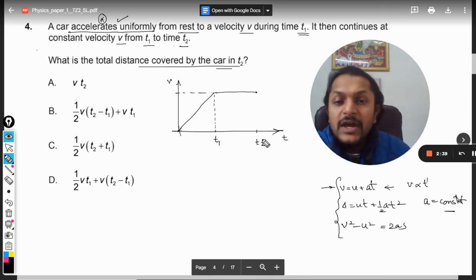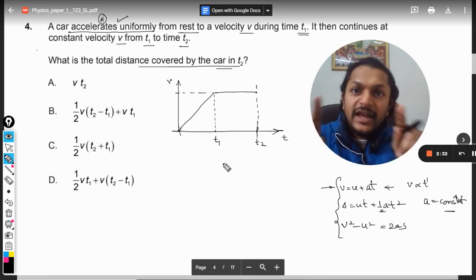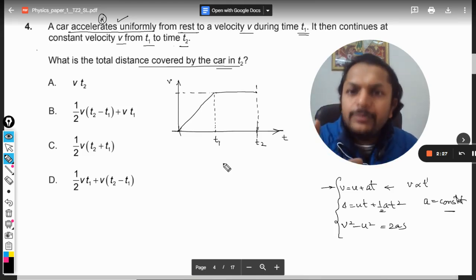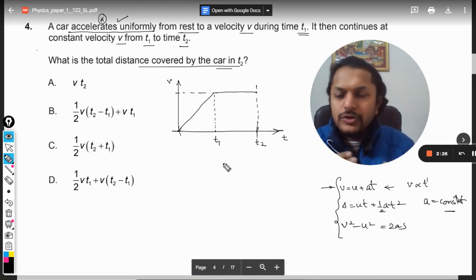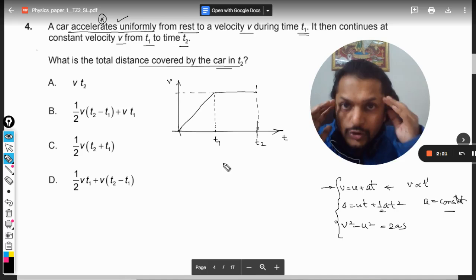So now once the velocity has increased, now the velocity is constant like this. So this velocity is now constant. We can see now what is the distance traveled here. My students, as we all know, whenever a V-T graph is there, the area of the V-T graph becomes the distance.